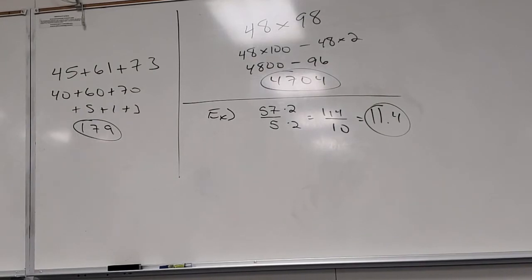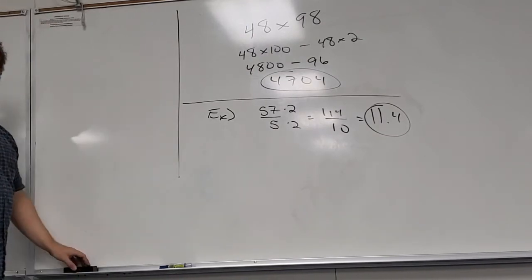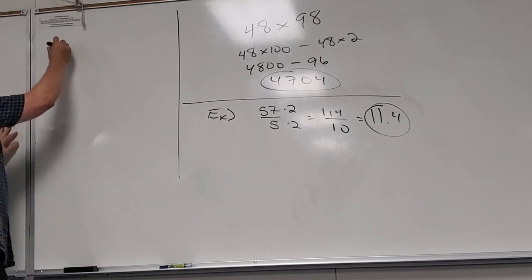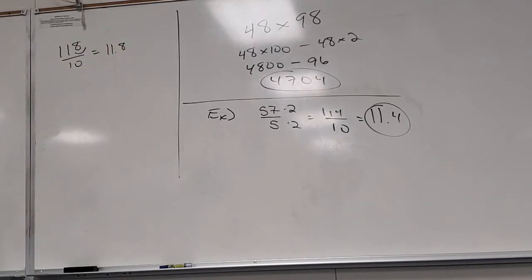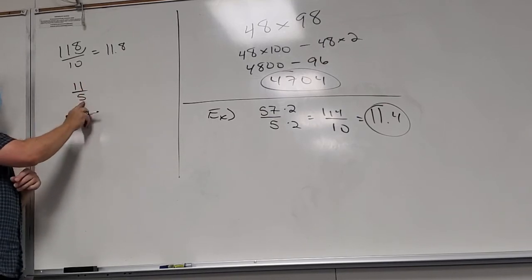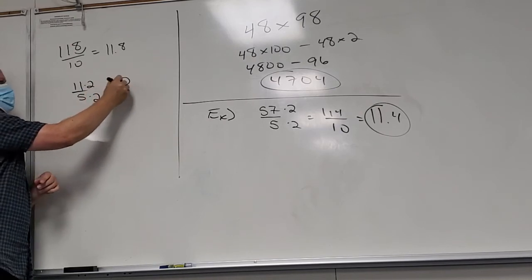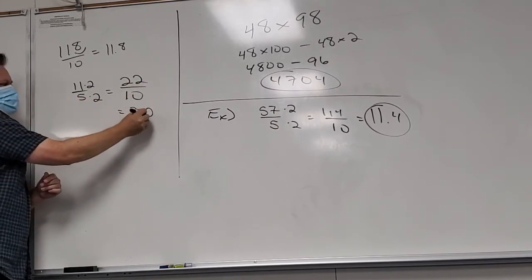This is how mental mathematics works a lot of the time. When you divide by 10 you move the decimal back once, divide by 100 you move it back twice. That's why 10 is the best number to divide by. To divide by 5, just double the numerator and move the decimal back once.